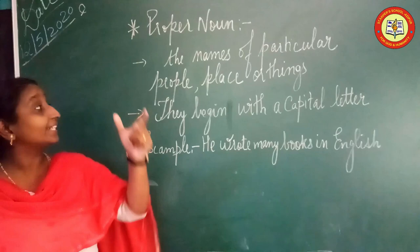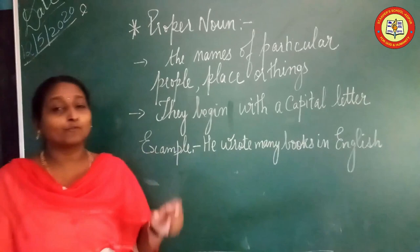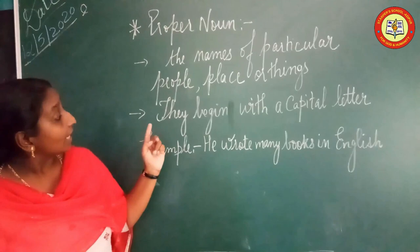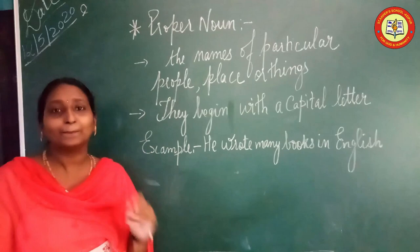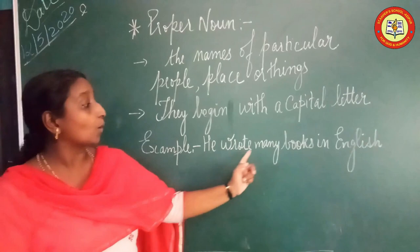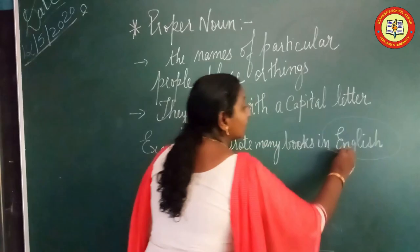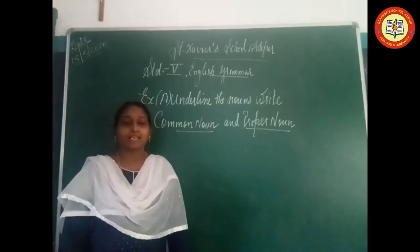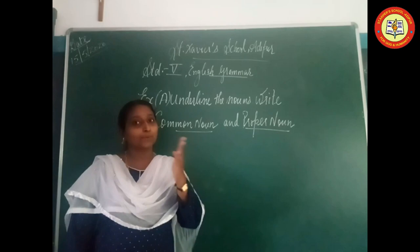The second type of Noun is a Proper Noun. The name of a particular person, place or thing — that means it gives a specific name — is known as a Proper Noun. An important rule about Proper Noun is that they always begin with a Capital Letter. You should always remember to begin with a Capital Letter. For example: 'He wrote many books in English.' Here, 'English' is a Proper Noun.